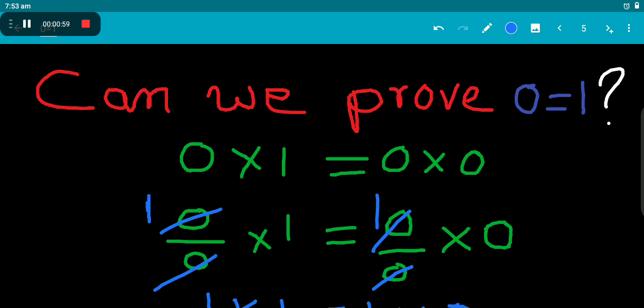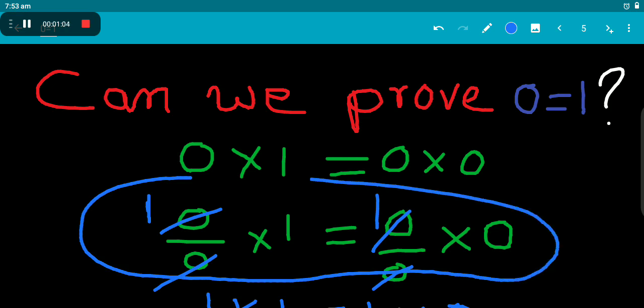But is this correct? No. Why is it not correct? Because we are dividing by 0 and then canceling. That is wrong. We cannot divide by 0.